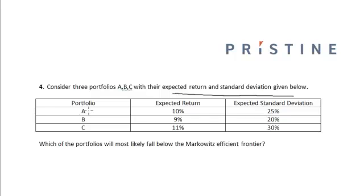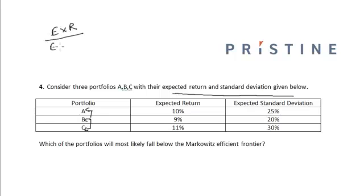To calculate which of the portfolios is falling below the Markowitz efficient frontier, the criteria to determine that portfolio is to find the ratio of the expected return divided by the expected standard deviation for each portfolio.